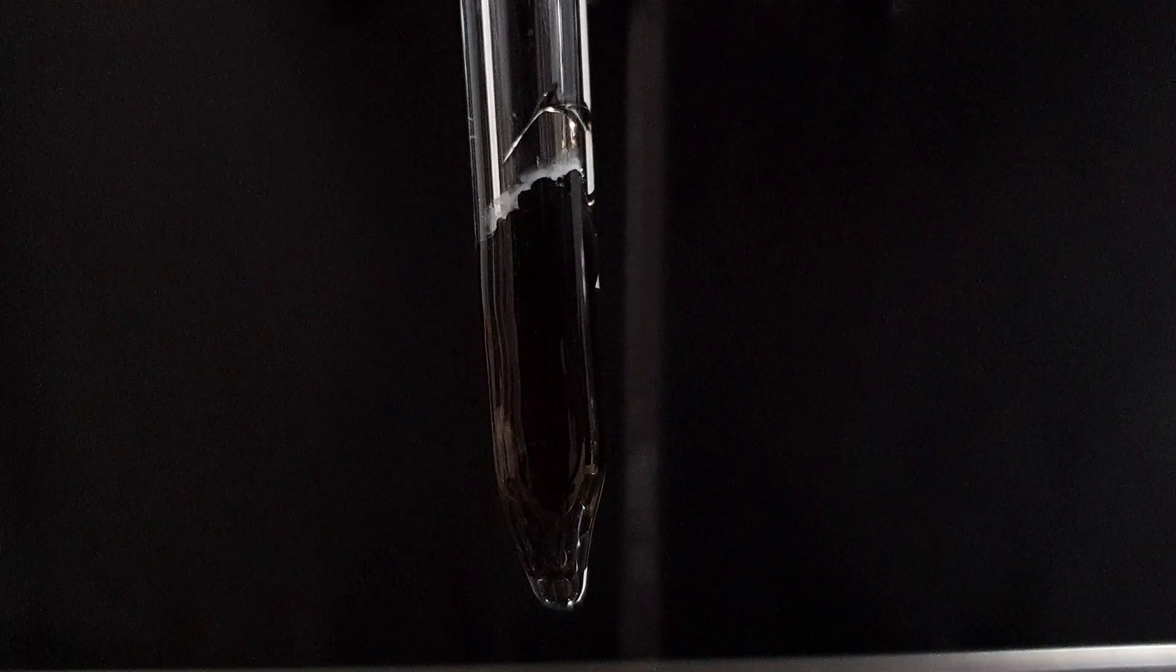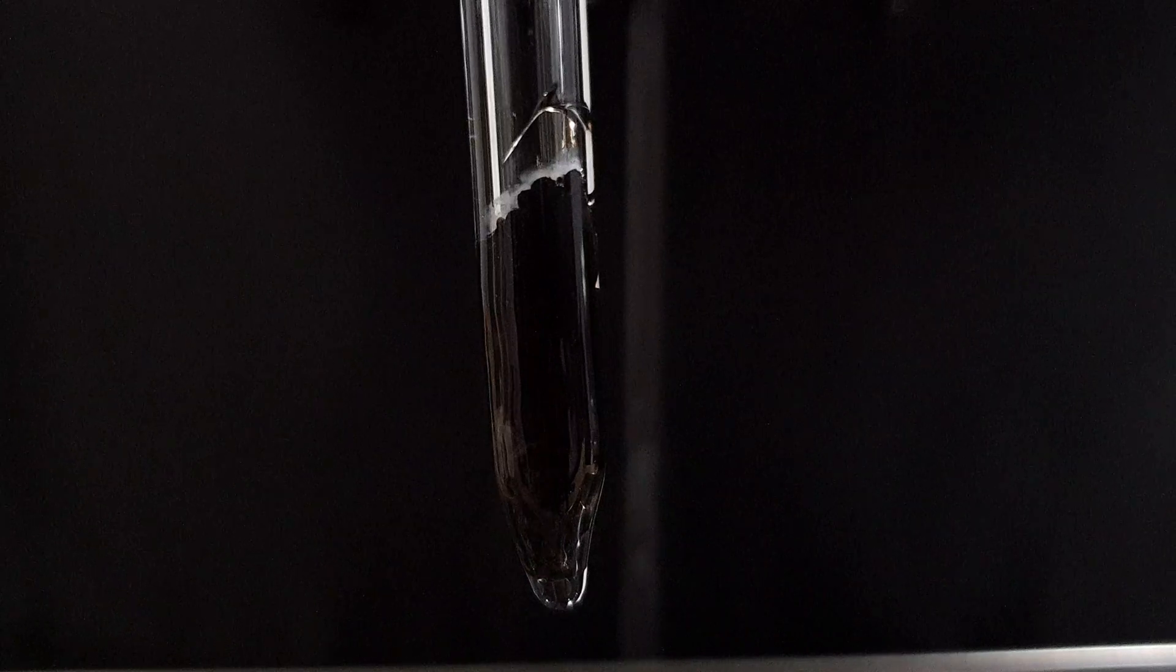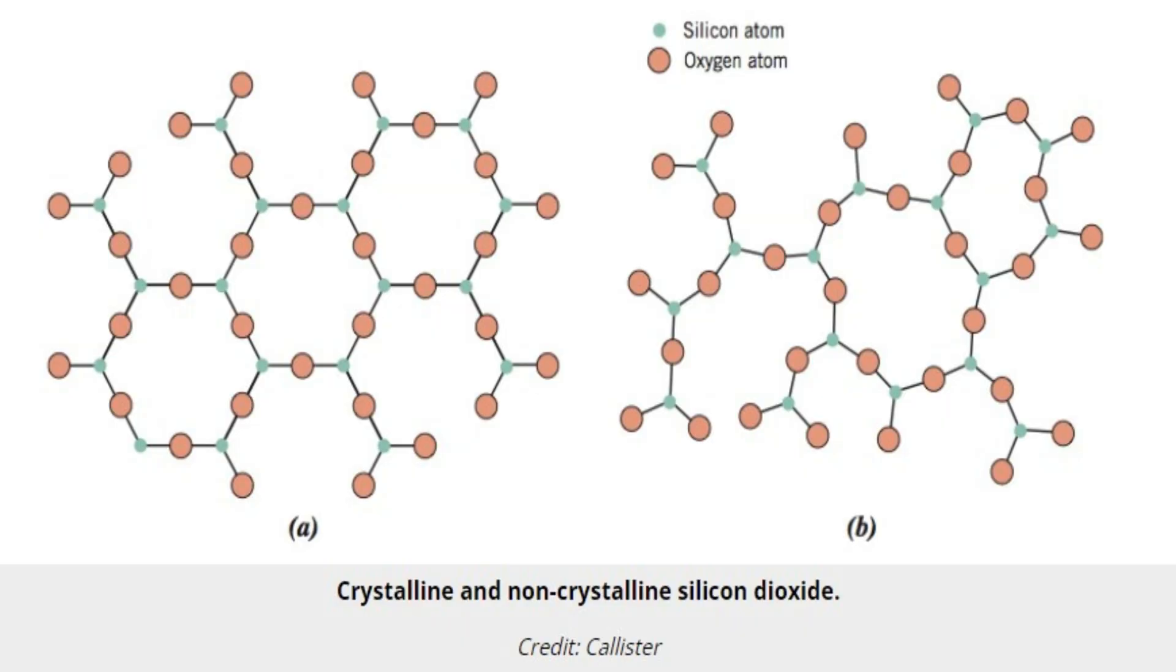What remains is a black substance. What we see here is elemental silicon. Glass consists mostly of silicon dioxide. The bond between silicon and oxygen is very strong.